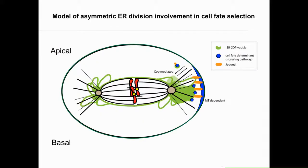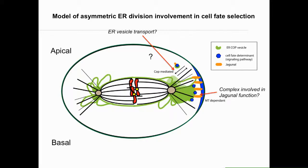Rather than a laundry list of future directions, here is a model of questions we want to answer. First, does ER vesicle transport and vesicle recycling play a role in cell fate selection? Second, is Jaganol playing a more complex role at the cortex, stabilizing spindle rotation similar to proteins like Inscuteable? Or is Jaganol playing a role in centrosome stability and aster localization? Defects in aster localization or the mitotic spindle would affect rotation as well.